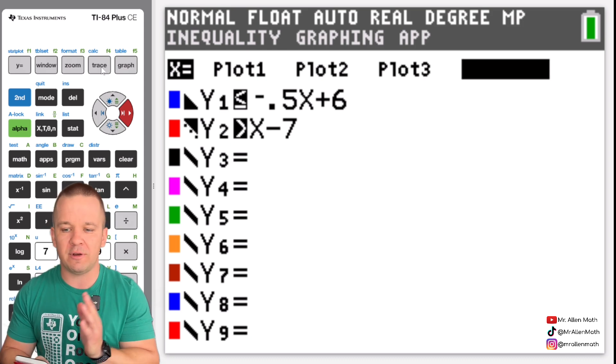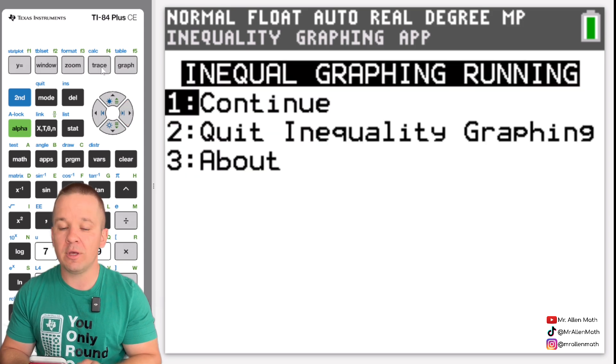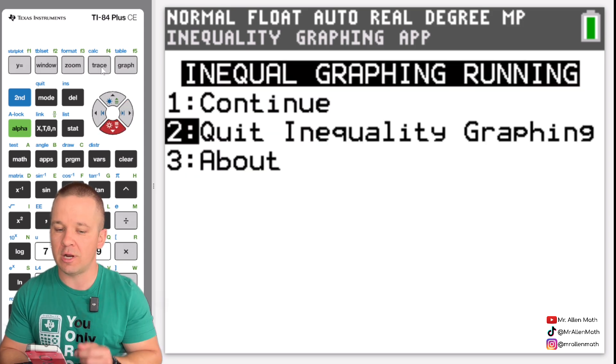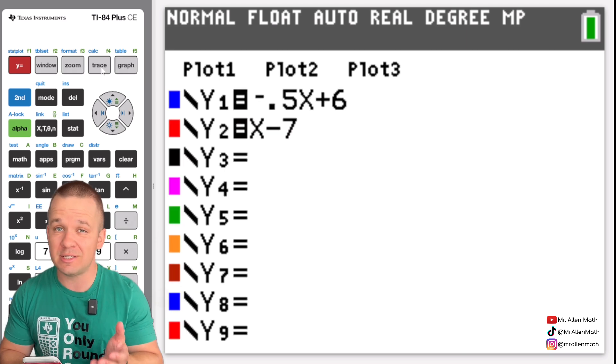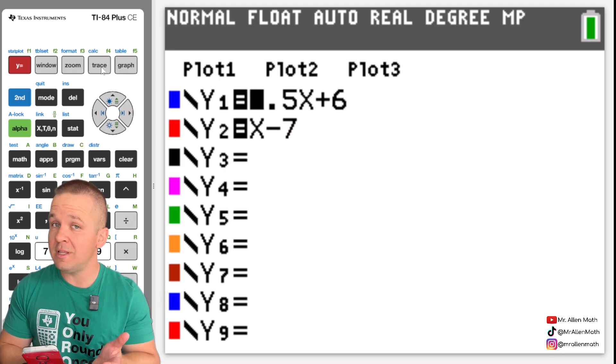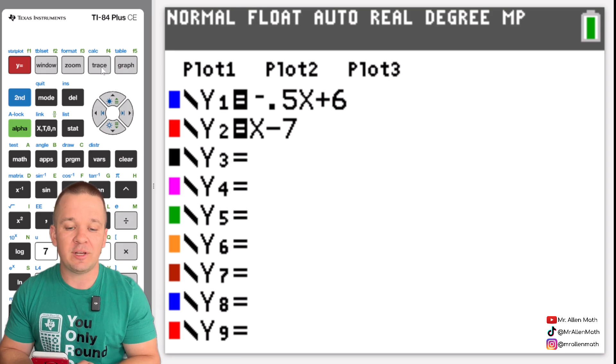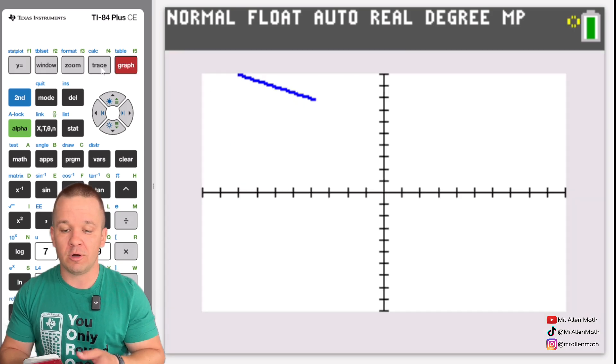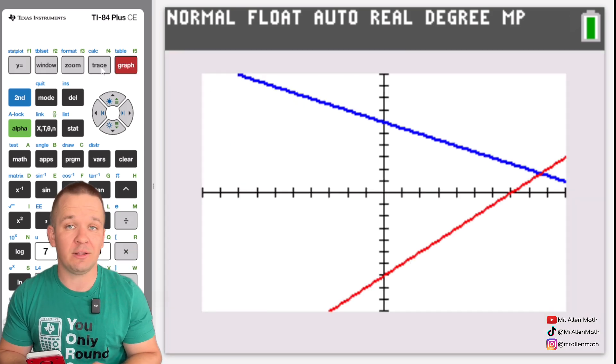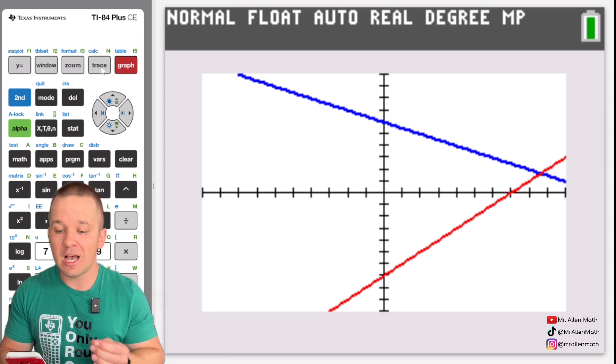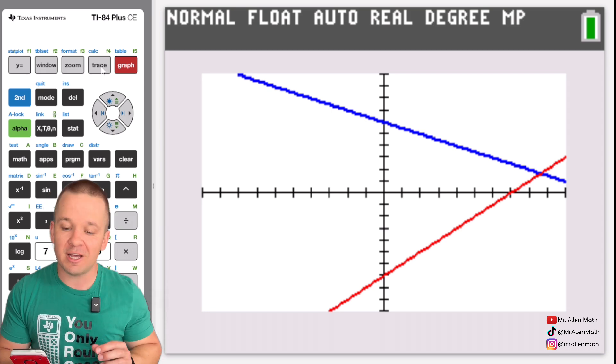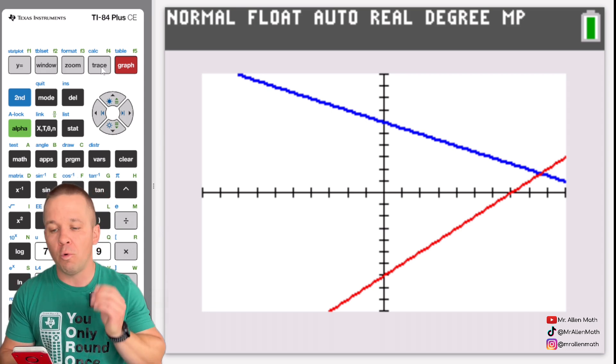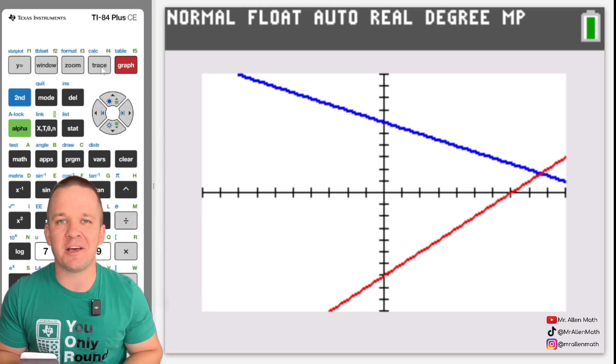We'll hit quit app it'll ask us if we want to yes we're gonna go down to number two hit quit and we're back if you go back to your y equals you'll still see those equations in there you won't see the x equals up in the top left hand corner anymore. So that's about it for this one here guys hope you liked it if you have any questions feel free to drop them in the comments and if you like this video please like it and subscribe to the channel and have a wonderful fantastic day see you guys later.